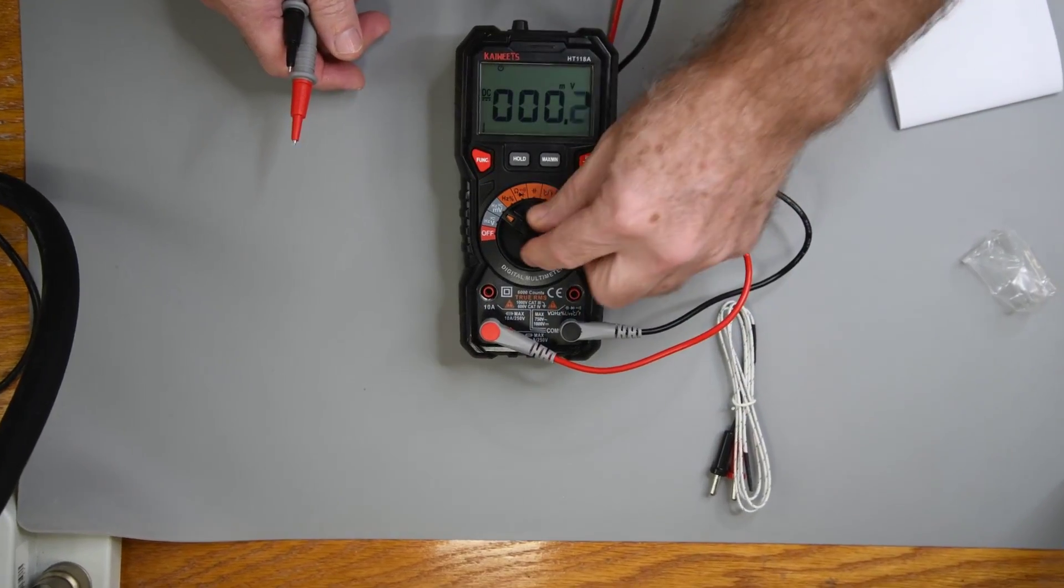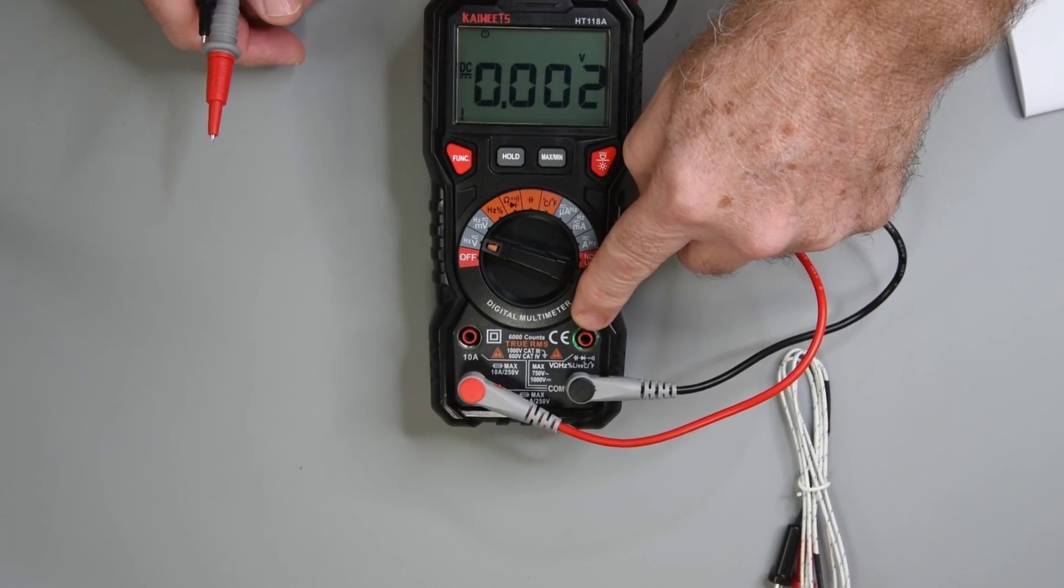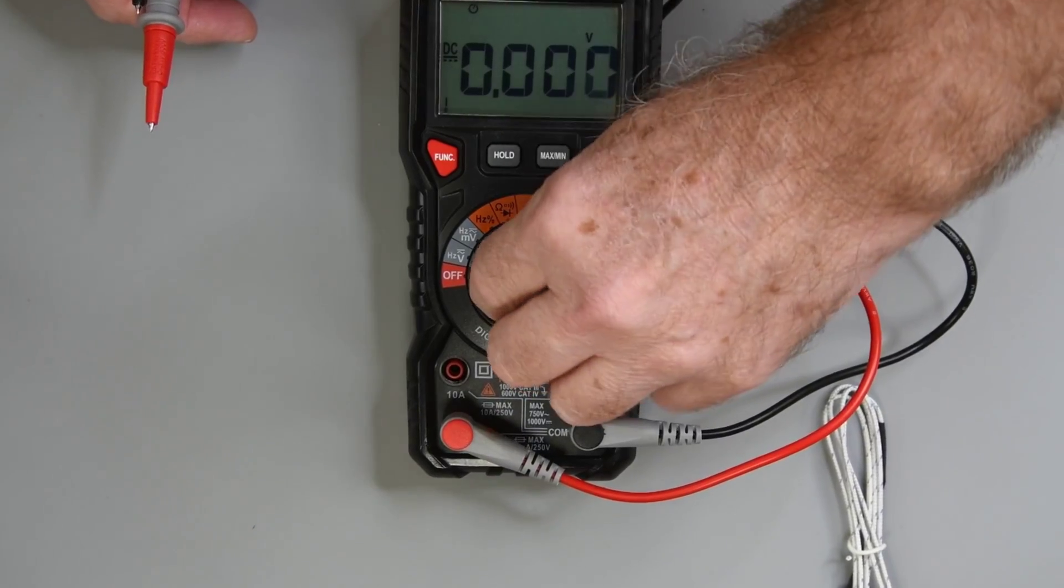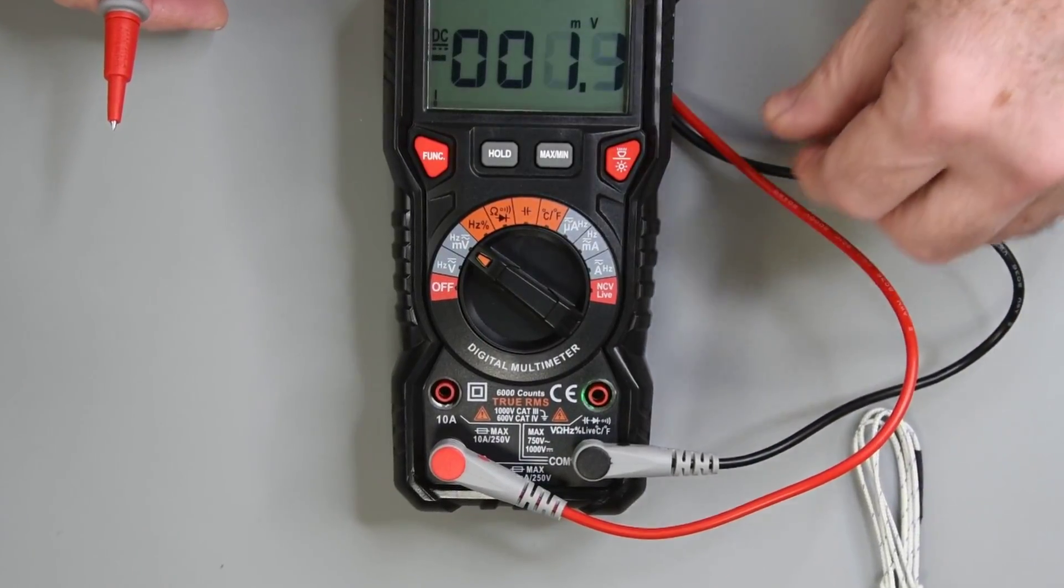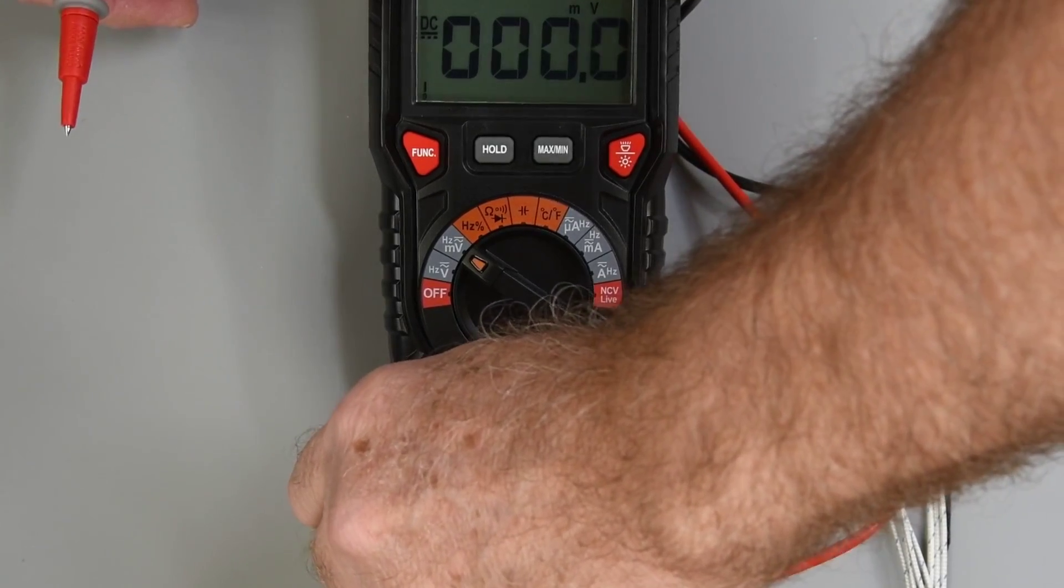When you select a function, LEDs light up around the jacks that are supposed to be used. At first I thought, well that's a waste. But trying to look at this as maybe the first time using a multimeter, I could see where that might help get the probes correct for the measurement selected.